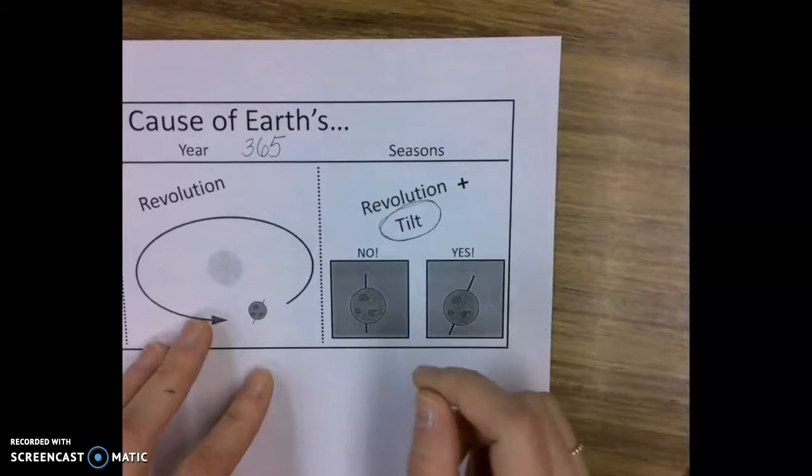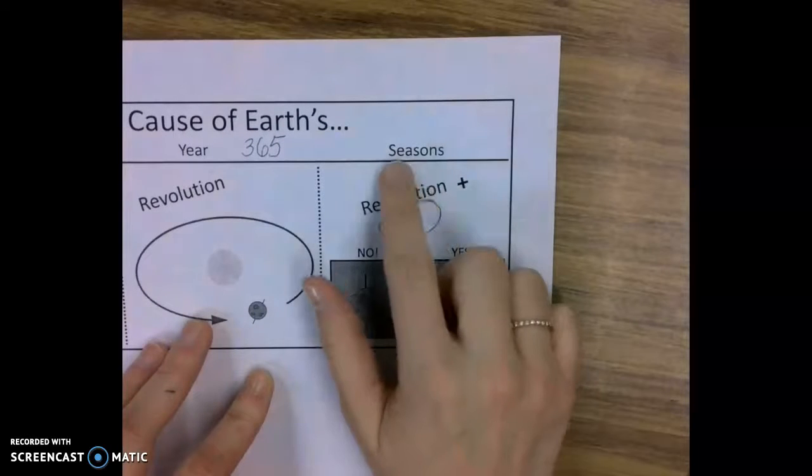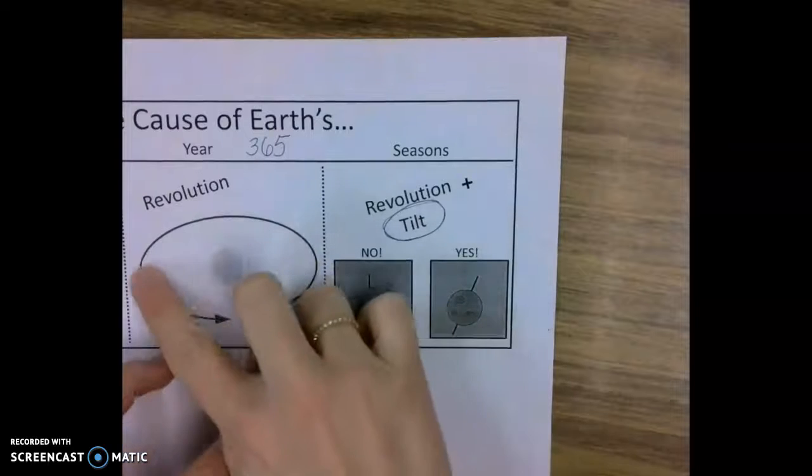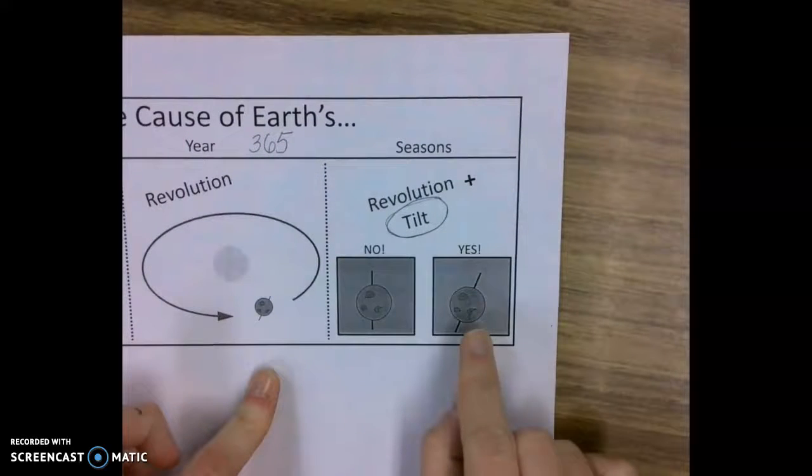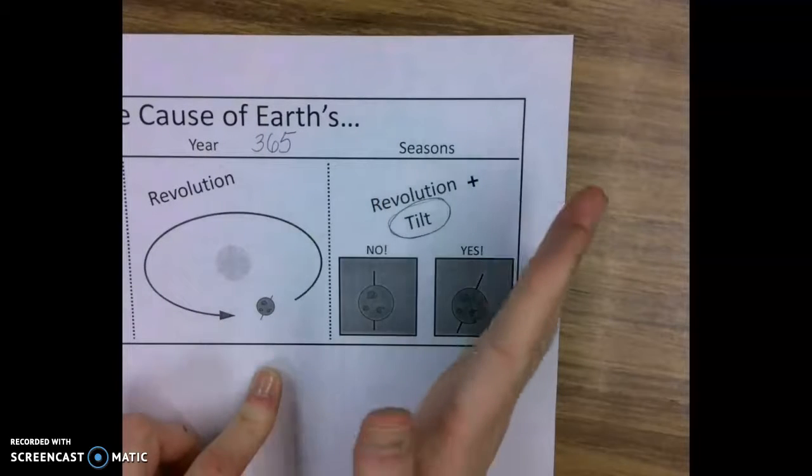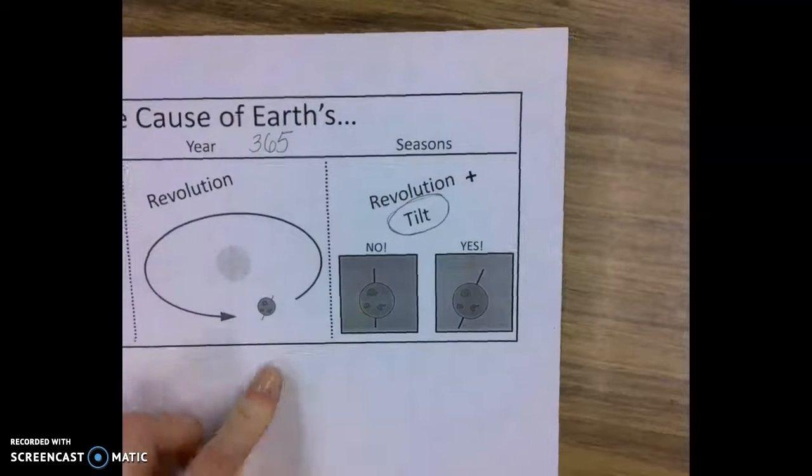And last of all, the reason why we have the seasons is because of the revolution and the tilt. So it has nothing really to do with the sun. It has to do with the tilt.